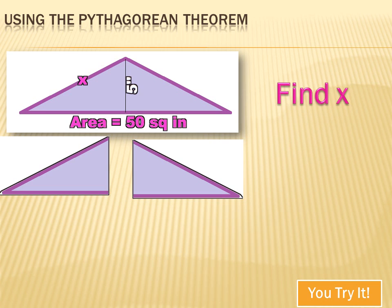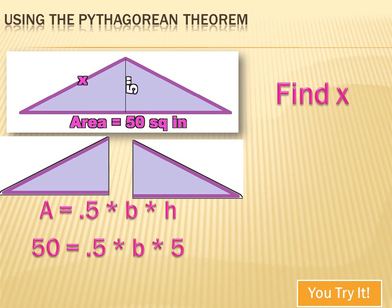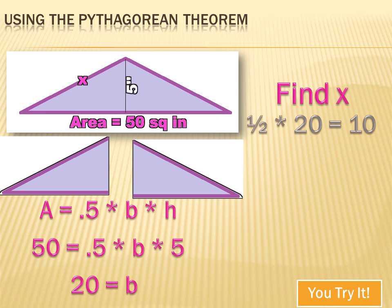Let's go back to the original triangle. The area is 50 and the height is 5 inches, so I can figure out the base. Area equals one-half times the base times the height: 50 equals one-half times the base times 5, so the base is 20 inches. Now, each of the two right triangles is one-half of the original triangle, so if the base of the original triangle is 20, the base of each right triangle is 10. I know this dimension is 10 inches, and the height dimension is 5 inches.